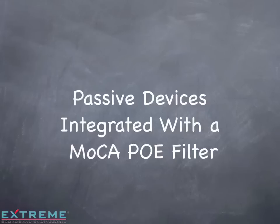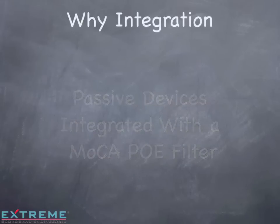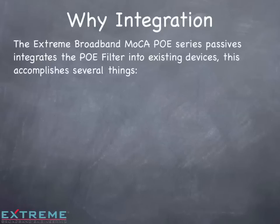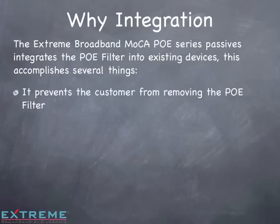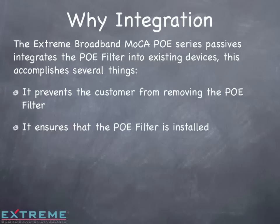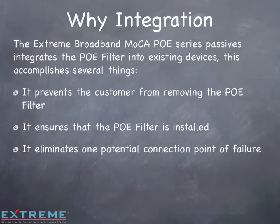Let's now look at passive devices that integrate a MoCA point-of-entry filter. The Extreme Broadband MoCA PoE series passives integrates the point-of-entry filter into existing devices. This accomplishes several things: it prevents the customer from removing the point-of-entry filter, ensures that the filter is installed and the MoCA network is protected, eliminates one potential connection point of failure that could cause a truck roll, and saves space in the enclosure, making room for other devices and proper cable bins.